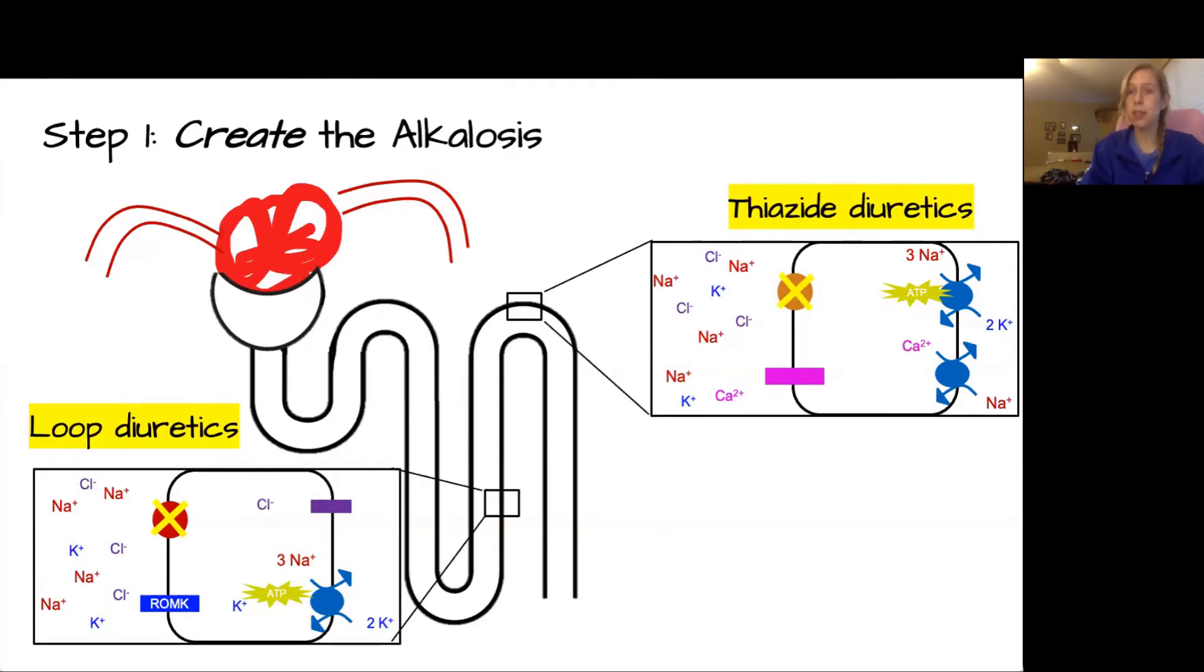The combined effect of both of these diuretics, which block these important transporters, results in there being a very high flow of sodium, water, and other solutes to the distal nephron.